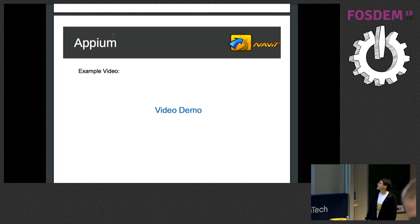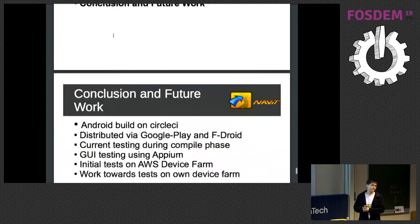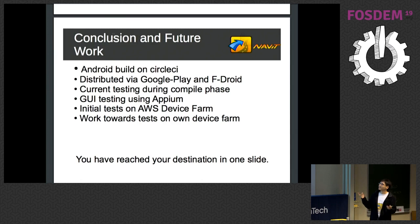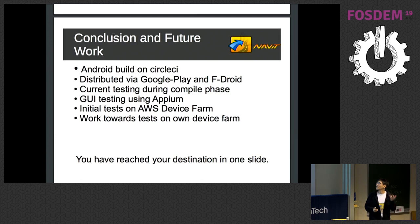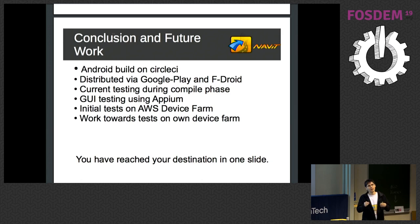To conclude: we built Android APK packages and a Raspberry Pi image using CircleCI. We distributed it via Google Play and Asteroid. We did some testing of the compile phase, and I showed a brief example of GUI-based testing using Appium run on the AWS device farm. We would now like to work towards our own device farm on top of OpenSTF, because OpenSTF is just one instance and we'd probably have devices at every developer site — so we'll need to add a layer on top.